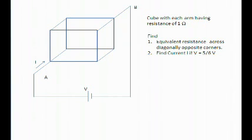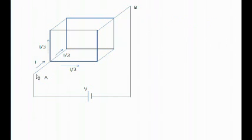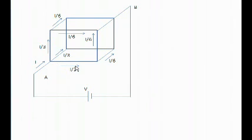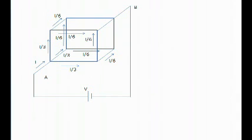We are using this question to understand the concept of equipotential points. When current I enters the network it finds three different routes, and since the network is very uniform, the current divides equally: I/3 goes through each of the three branches. Each I/3 then further divides into two parts of I/6 and I/6. So all three branches from the first node each carry I/3 which splits into I/6 and I/6 at the intermediate nodes.